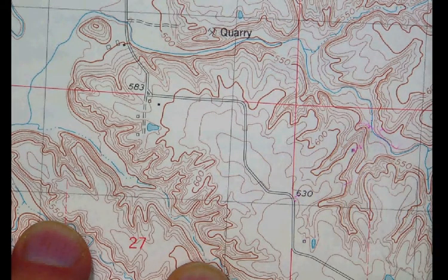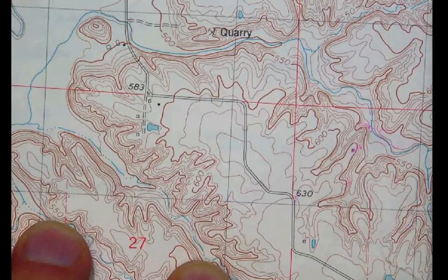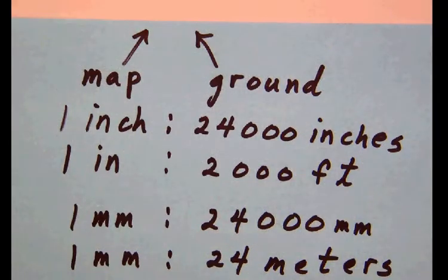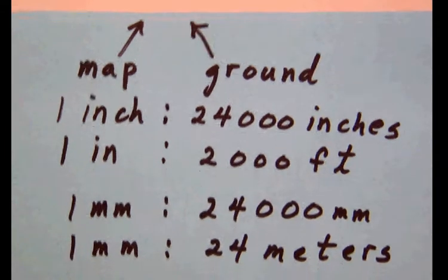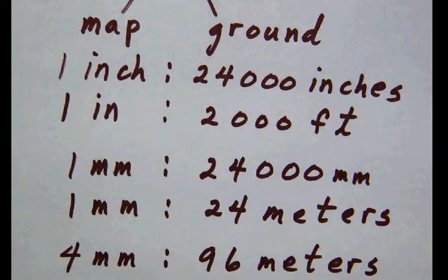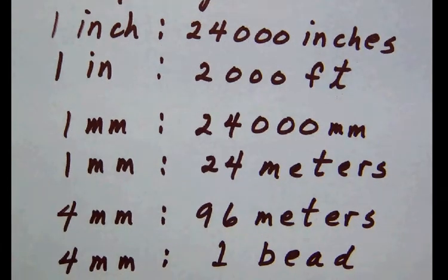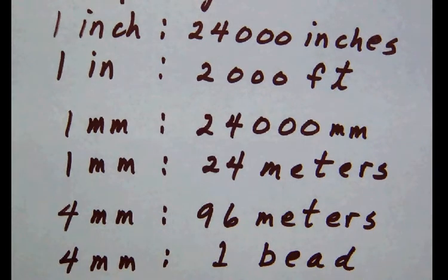Now we can even do better though with even less math. Since we know that one millimeter on the map corresponds to a distance of 24 meters on the ground, then it would be true that four millimeters on the map would correspond to a distance of 96 meters on the ground. Now 96 meters on the ground is almost 100, and remember that is the distance that we set up for each bead of our ranger counting beads. Consequently we can make that approximation that four millimeters on the map is one bead of our counting beads.